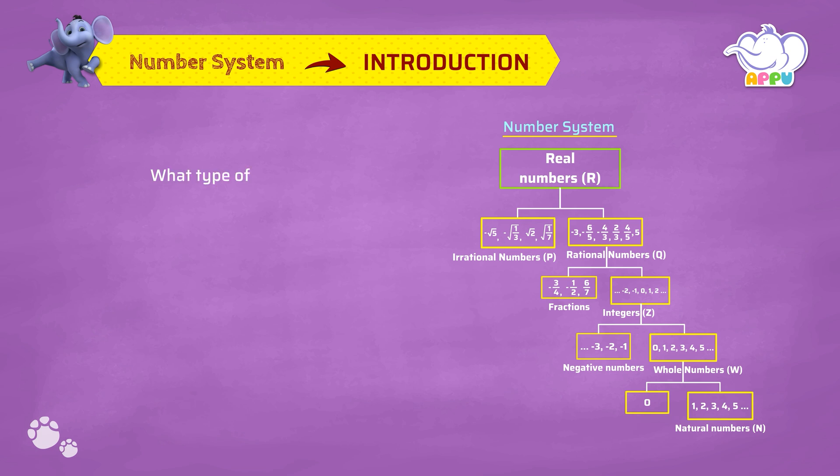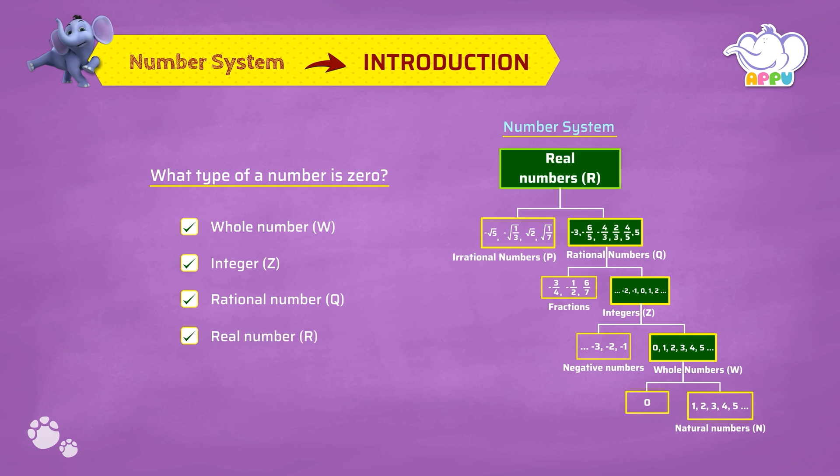What type of a number is zero? Zero is a whole number, integer, rational number and a real number too.